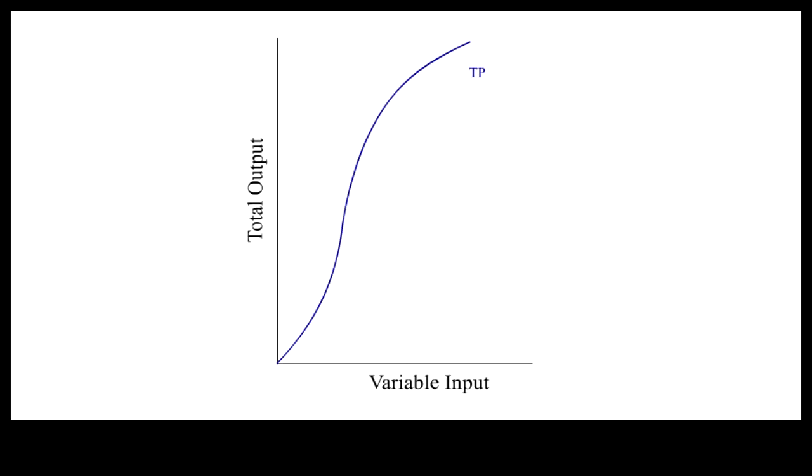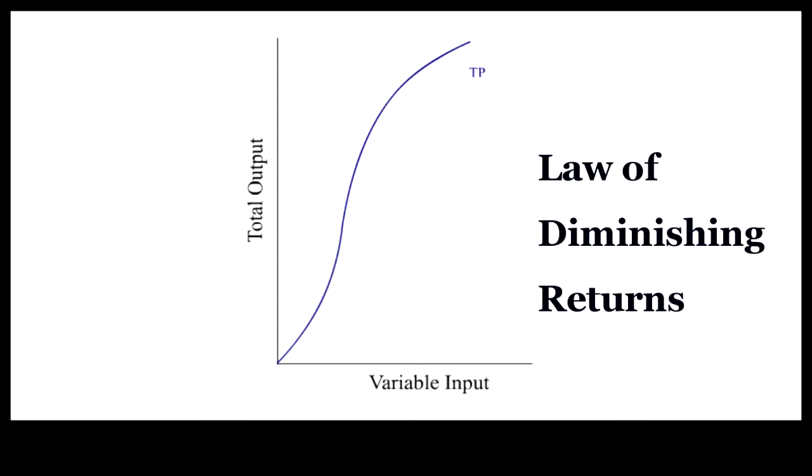In the short run where fixed inputs are combined with variable inputs, the production function is an S-shaped upward sloping curve. This total product curve starts with a segment with increasing slope followed by a segment with decreasing slope, reflecting the law of diminishing returns.